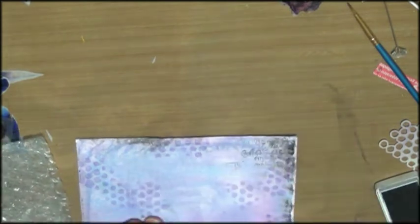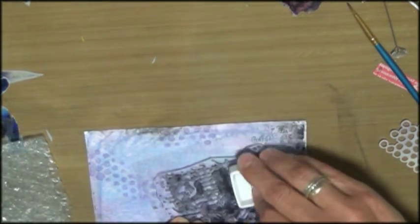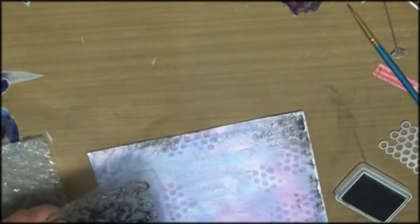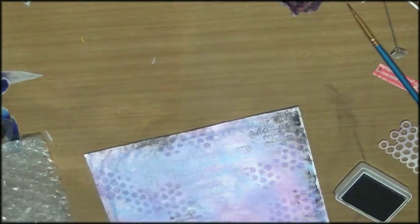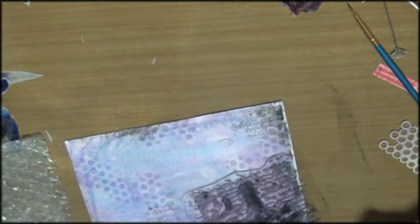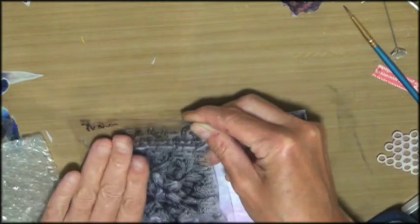The first layer is a stenciled layer. I am using Dusty Concord Distress Ink and a stencil by Crealise which is a Dutch company that asked me to do some guest design projects for them. And the second layer is a stamp layer and I am just inking up my whole stamp but stamping just parts of it.